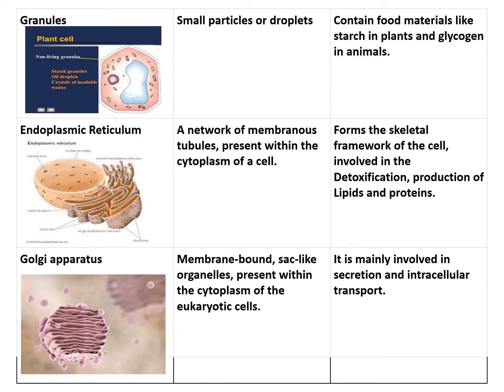Next are granules — very small particles or droplets scattered in the cytoplasm. They contain food materials like starch and glycogen. Starch is found in plants and glycogen in animals. There are also fat-containing granules that serve as food for the cell itself.